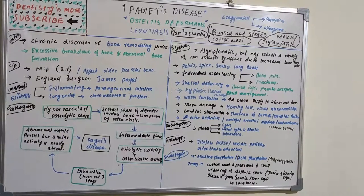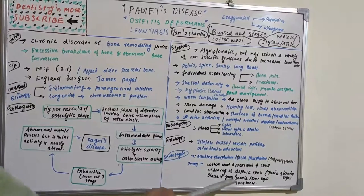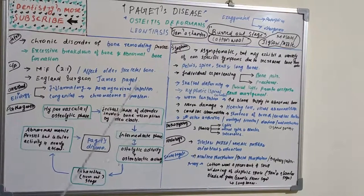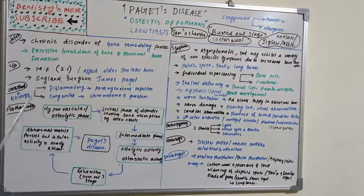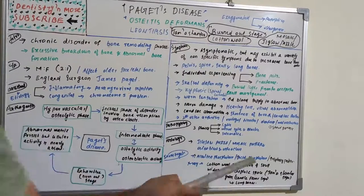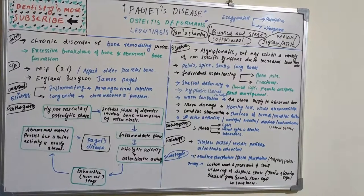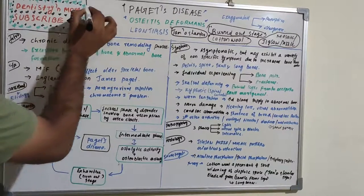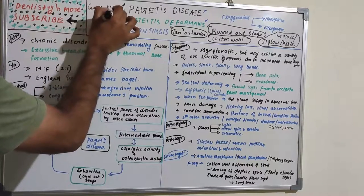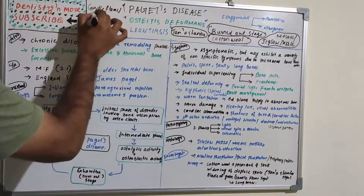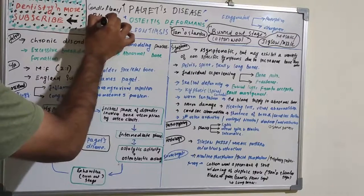There will also be a candle flame sign, also known as the blade of grass sign, which can be seen in longer bones. This is due to the peculiar radiographic appearance of longer bones in Paget's disease.